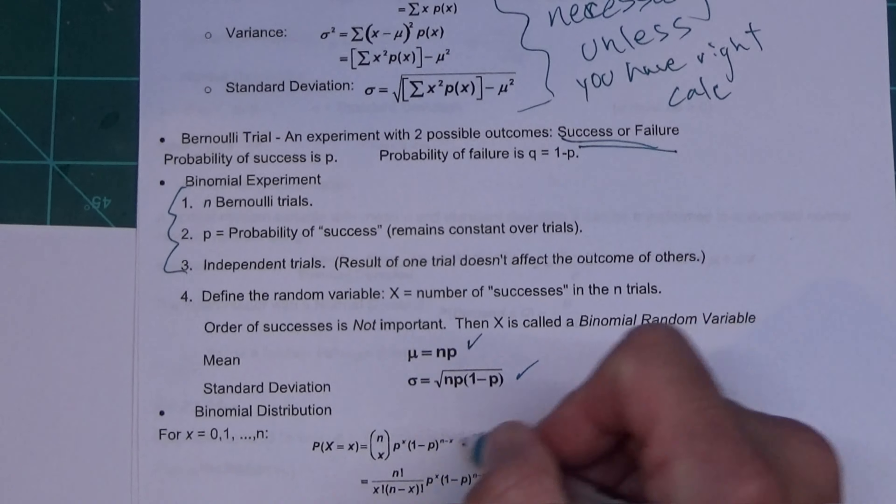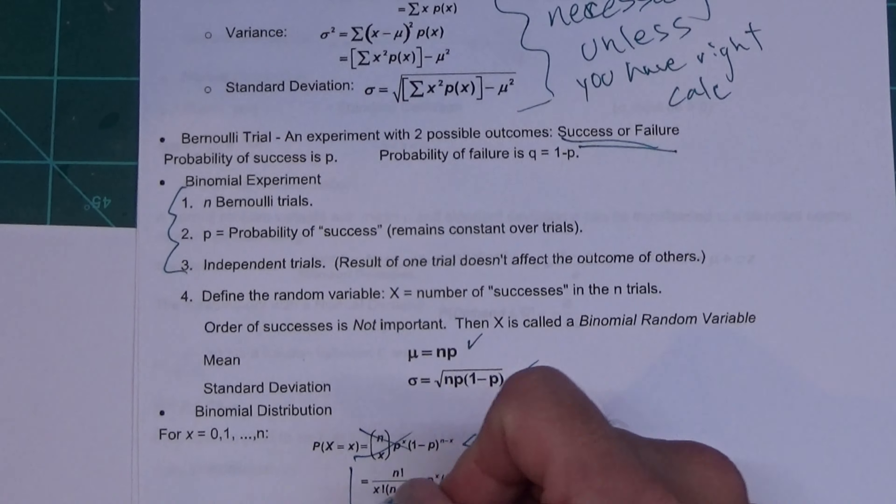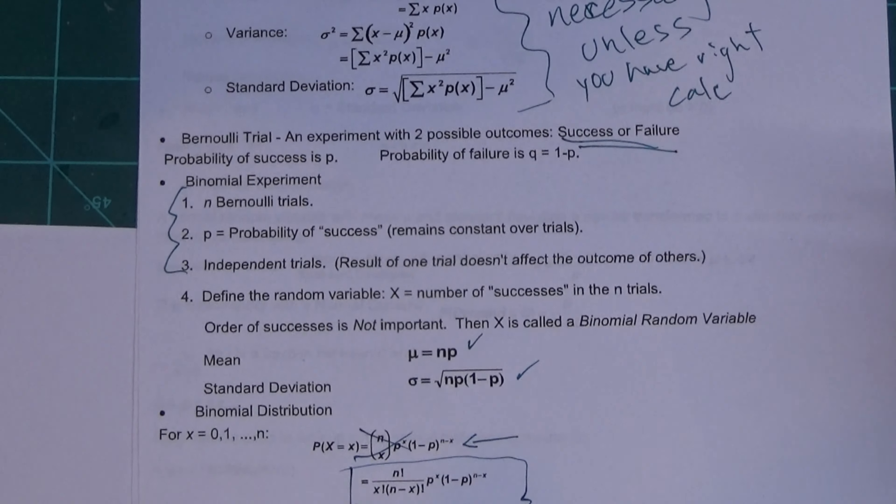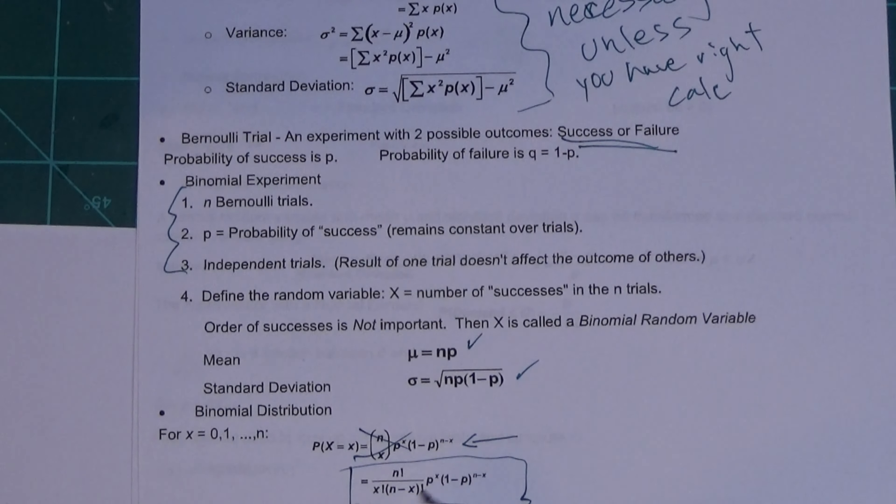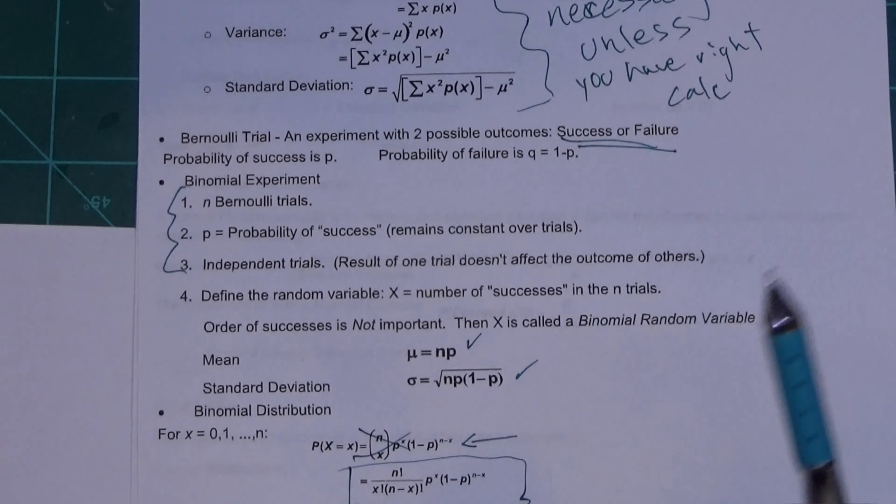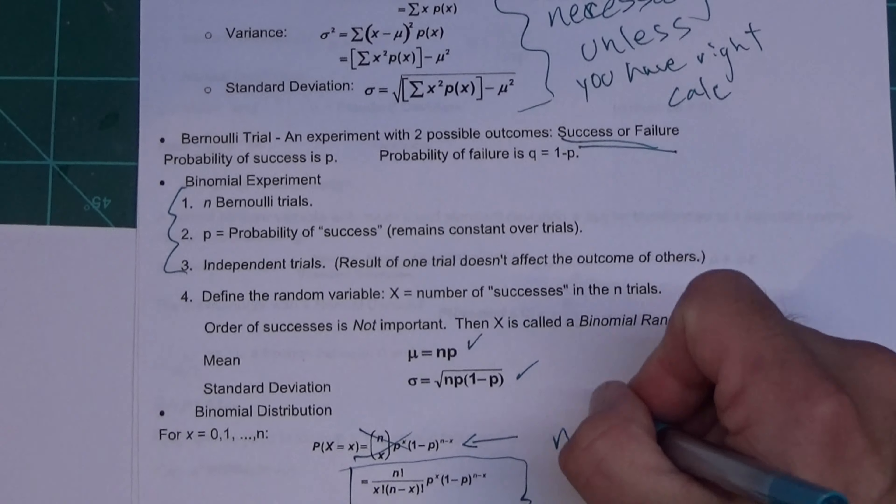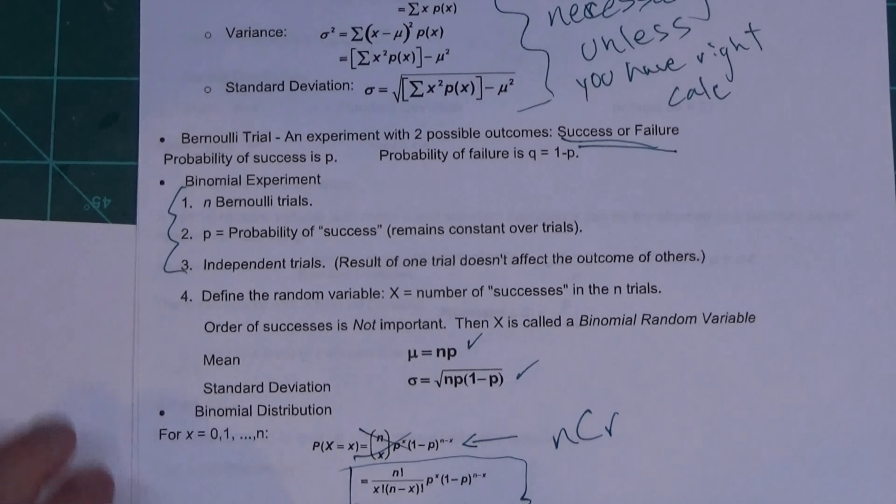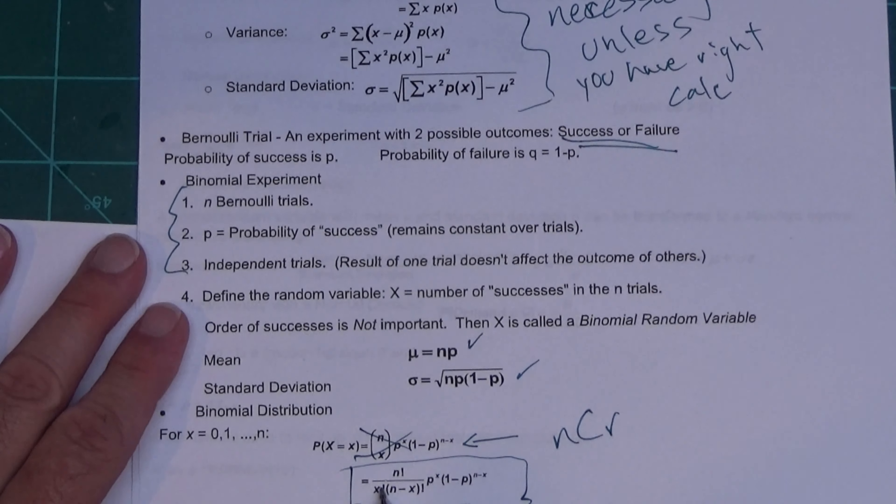This version of it I would not expect you to use, but this version you might. Again, most of the TI-30s will do this part right here if you know how to do it. It's called a combination. It usually looks like this on the calculator screen, so most of the TI-30s will do this part of this, making this equation a lot easier to deal with.